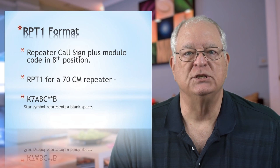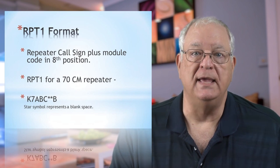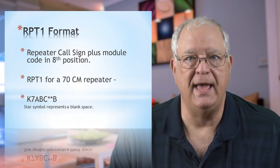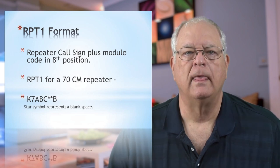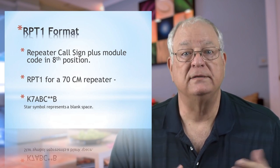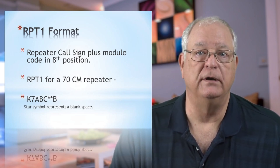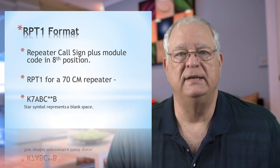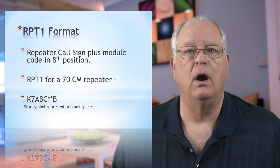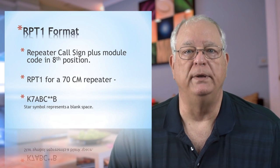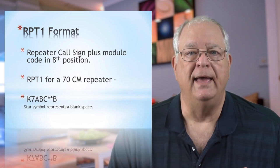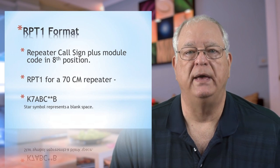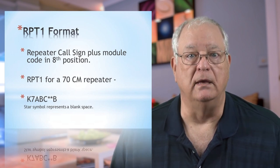You'll use spaces in the spots between the end of the callsign and the letter you place in position 8. If you are planning to access your local 70-centimeter repeater with a callsign of K7ABC, your RPT1 element would be K7ABC space space B.